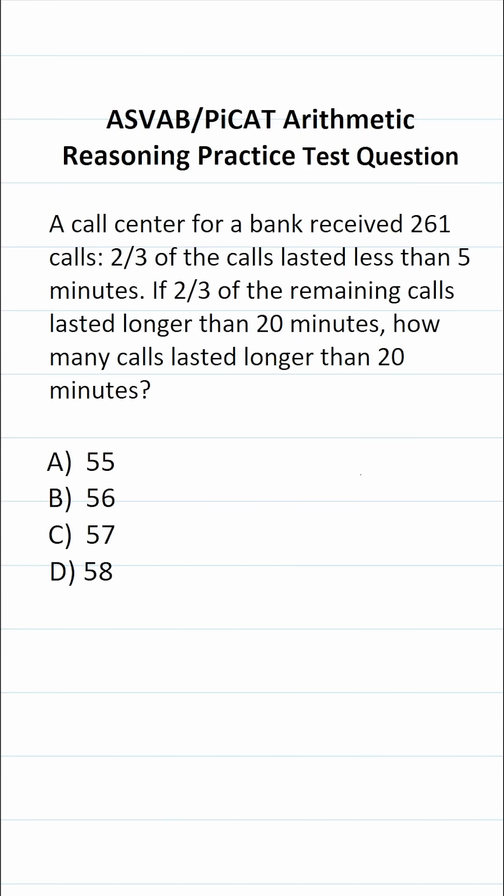This arithmetic reasoning practice test question for the ASVAB and PiCAT says, a call center for a bank received 261 calls. Two-thirds of the calls lasted less than five minutes. If two-thirds of the remaining calls lasted longer than 20 minutes, how many calls lasted longer than 20 minutes?